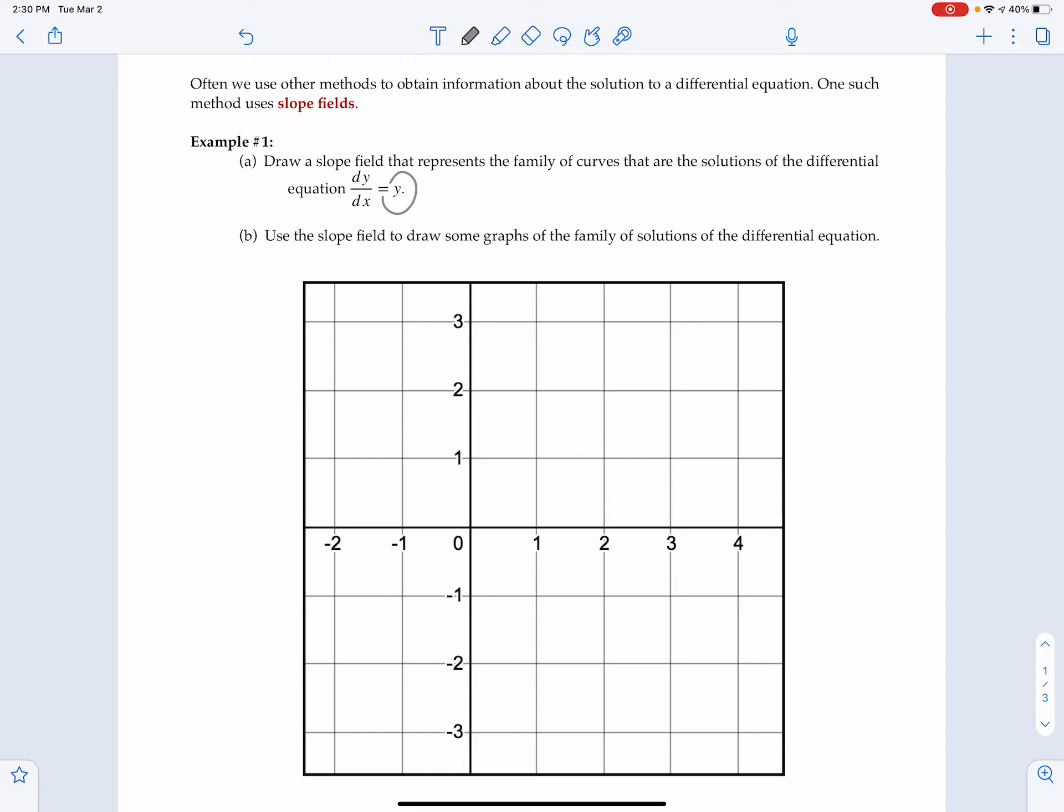Draw a slope field that represents the family of curves that are the solution for the differential equation dy/dx equals y. This particular differential equation, we are just using the y coordinate. So when y equals 3, the slope of the tangent line at that point is 3. We're going to just slowly sketch a slope of positive 3 through each grid point.